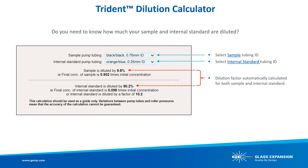Glass Expansion's dilution calculator helps you quickly determine the dilution factor when using the Trident inline reagent kit based on the peristaltic pump tubing installed. In this example, we selected black-black tubing with an internal diameter of 0.76 mm for the sample and orange-blue tubing with 0.25 mm ID for the internal standard, resulting in approximately 10% sample dilution. You can use the drop-down menu to select various tubing combinations and easily calculate your desired dilution factor.